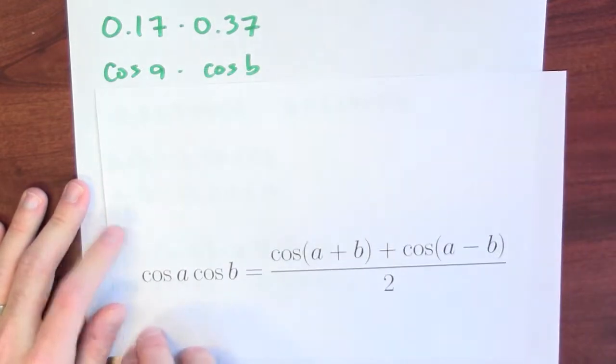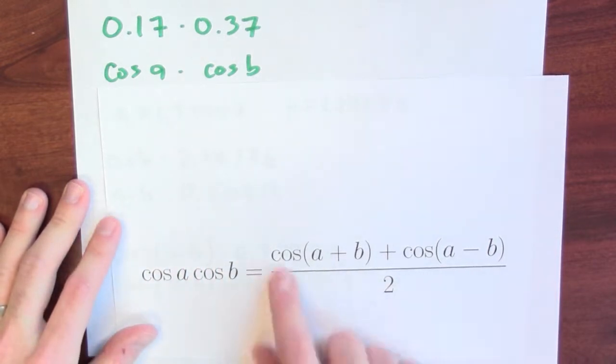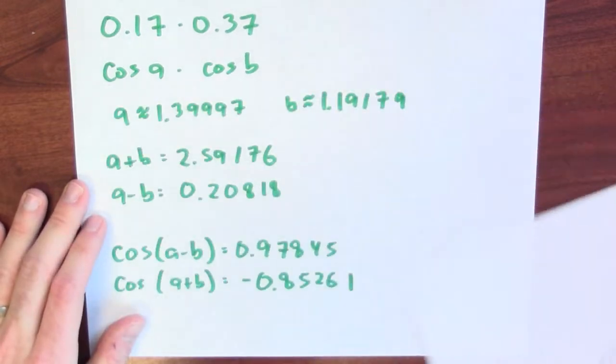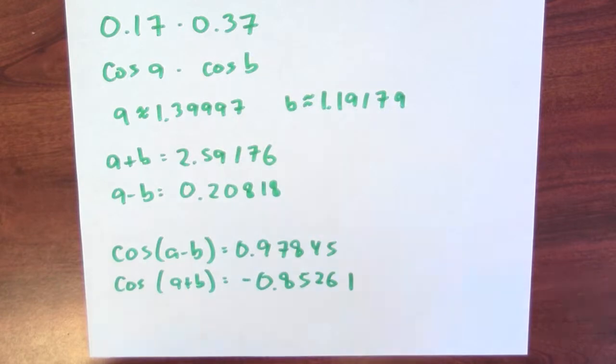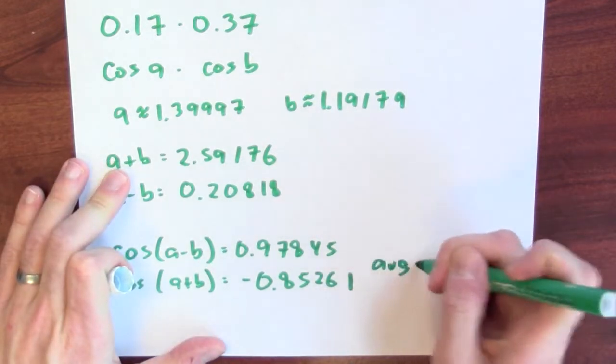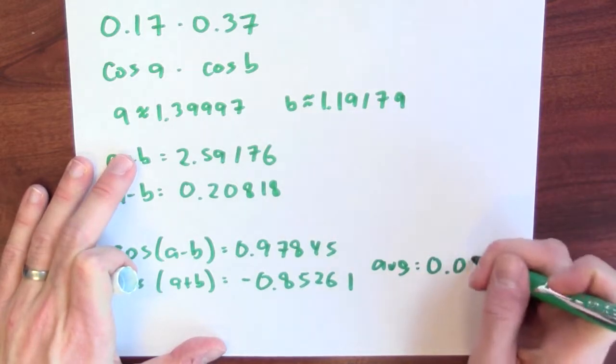Now the formula that we've got for the product of cosine a and cosine b tells us it's the average of cosine a plus b and cosine a minus b. I've computed cosine of a minus b and cosine a plus b, so all I have to do is take the average of these two numbers. And if I average these two numbers, I get 0.06292.